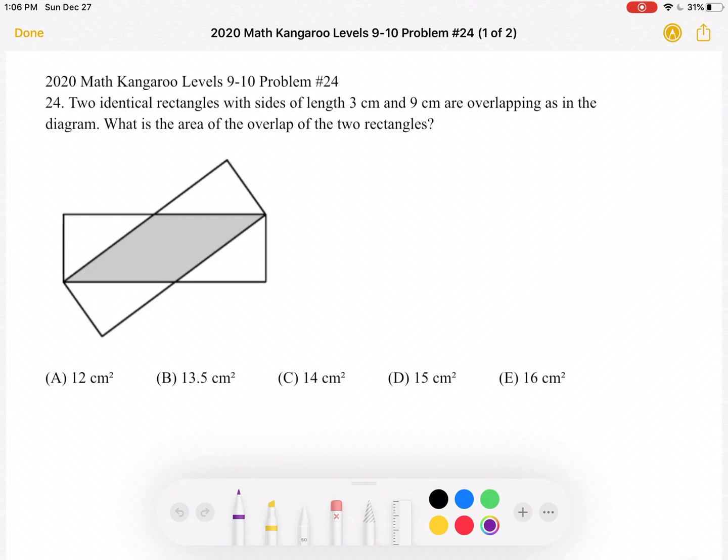This is the 2020 Math Kangaroo Levels 9-10 Problem Number 24. Two identical rectangles with sides of length 3 cm and 9 cm are overlapping as in the diagram. What is the area of the overlap of the two rectangles?